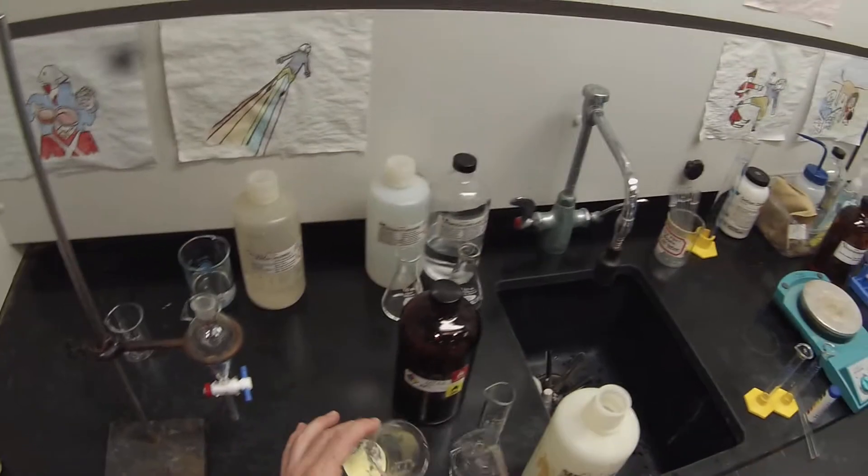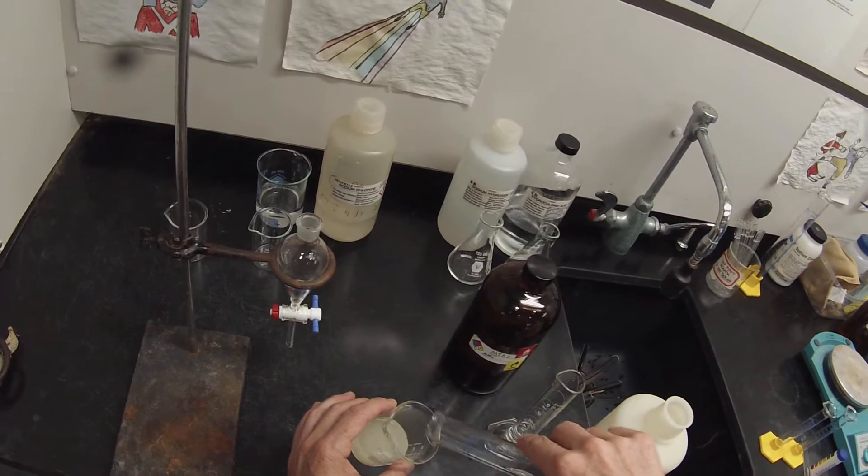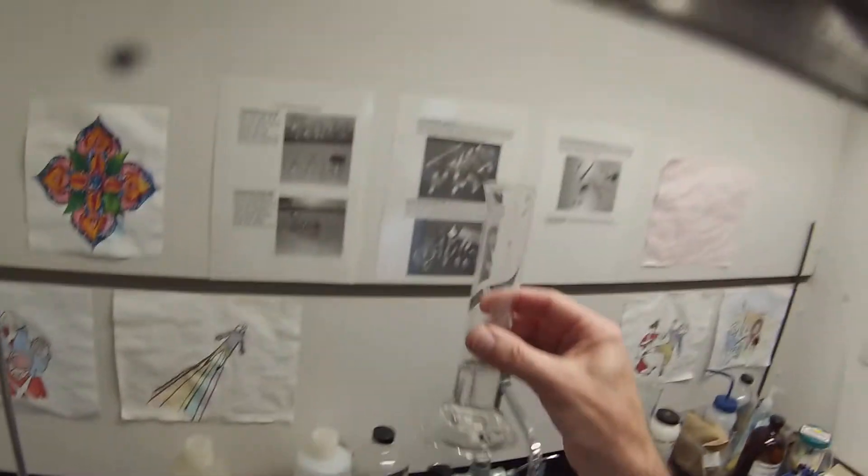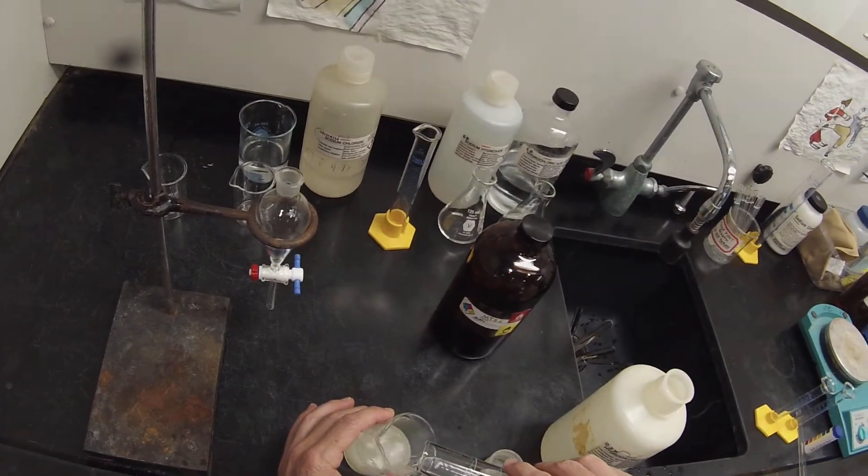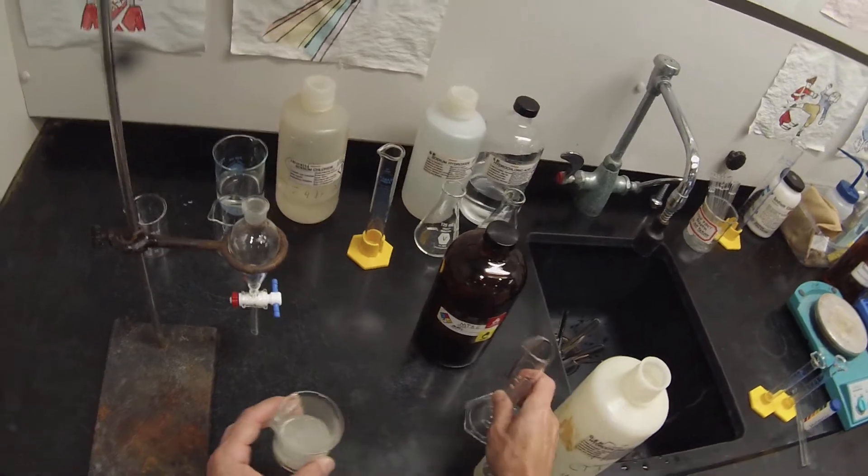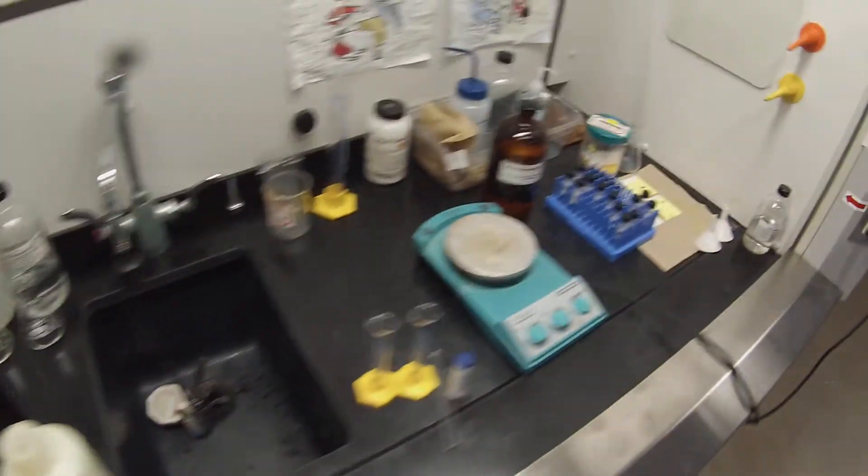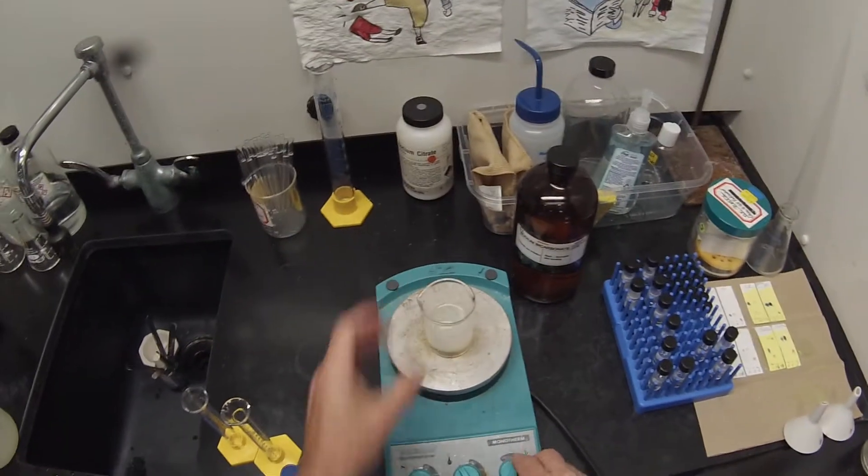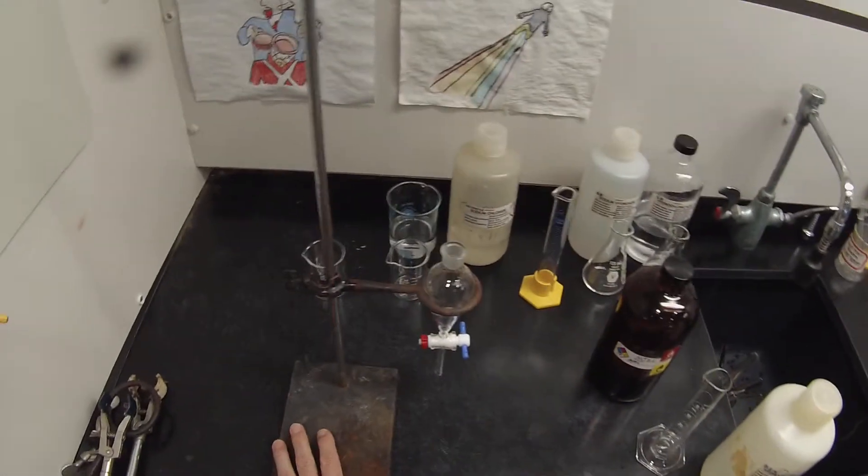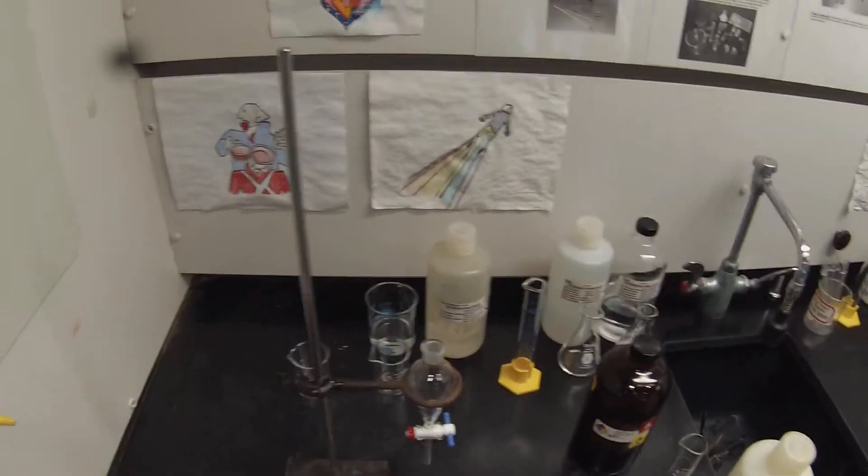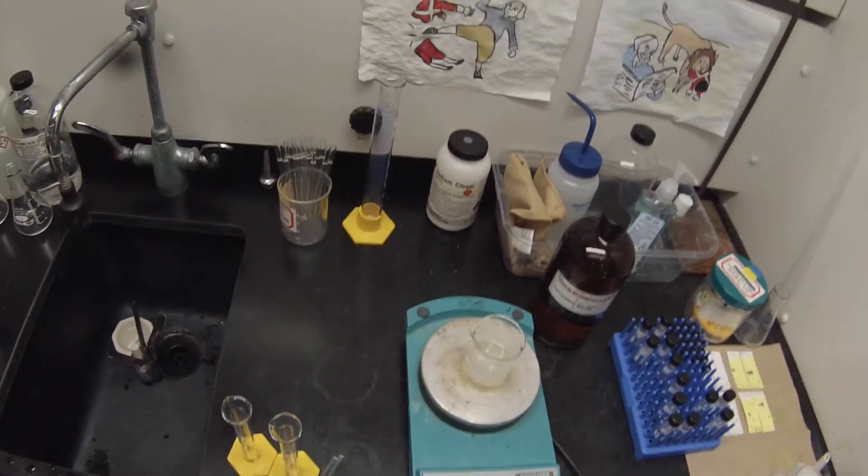We're going to add our 30 milliliters of MTBE, our organic solvent, and 15 milliliters of 0.5 molar hydrochloric acid. We're going to stick a stir bar in there, the smaller stir bar, and stir that at about 300 RPM to try to get all or almost all of that to go into solution.